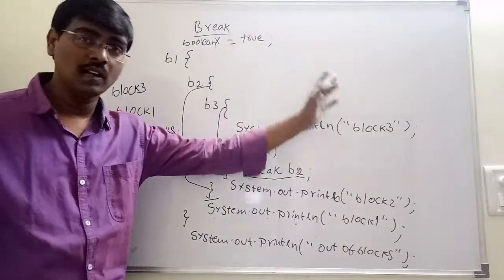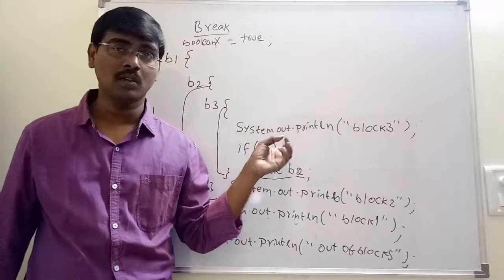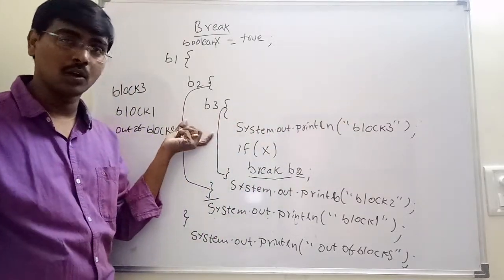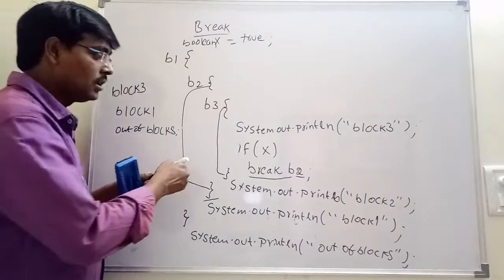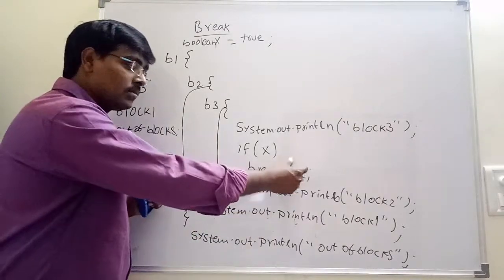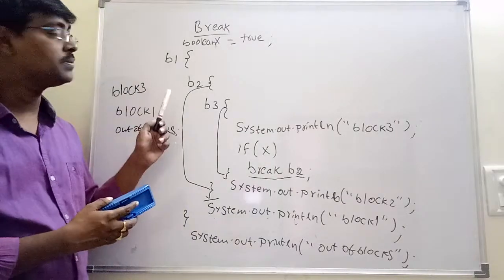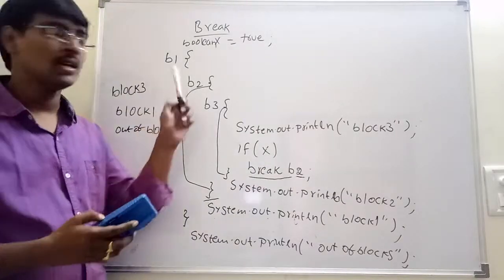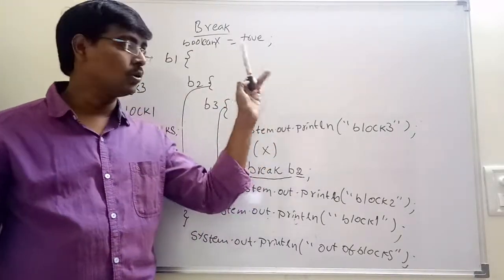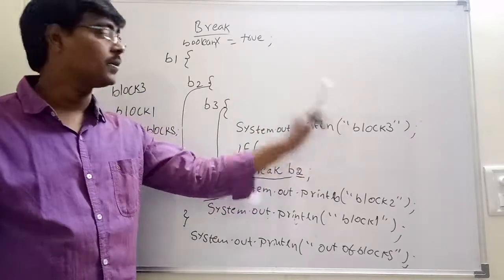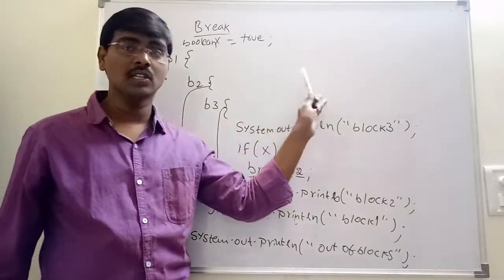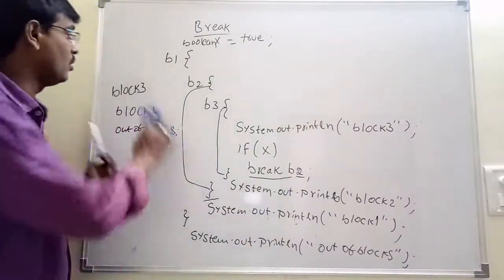This is the usage of nested blocks. When we have more than one number of blocks and want to come out of a particular block, we use break with a label. The purpose of break is to stop the current iteration within the loop and come out of it.